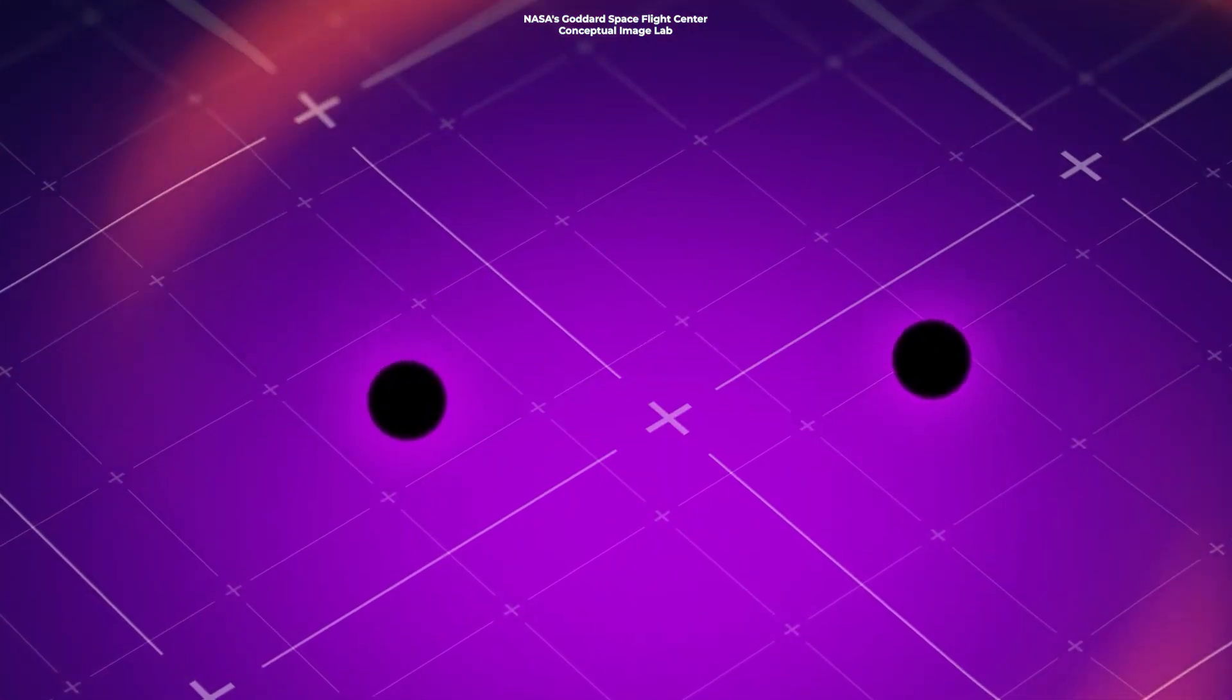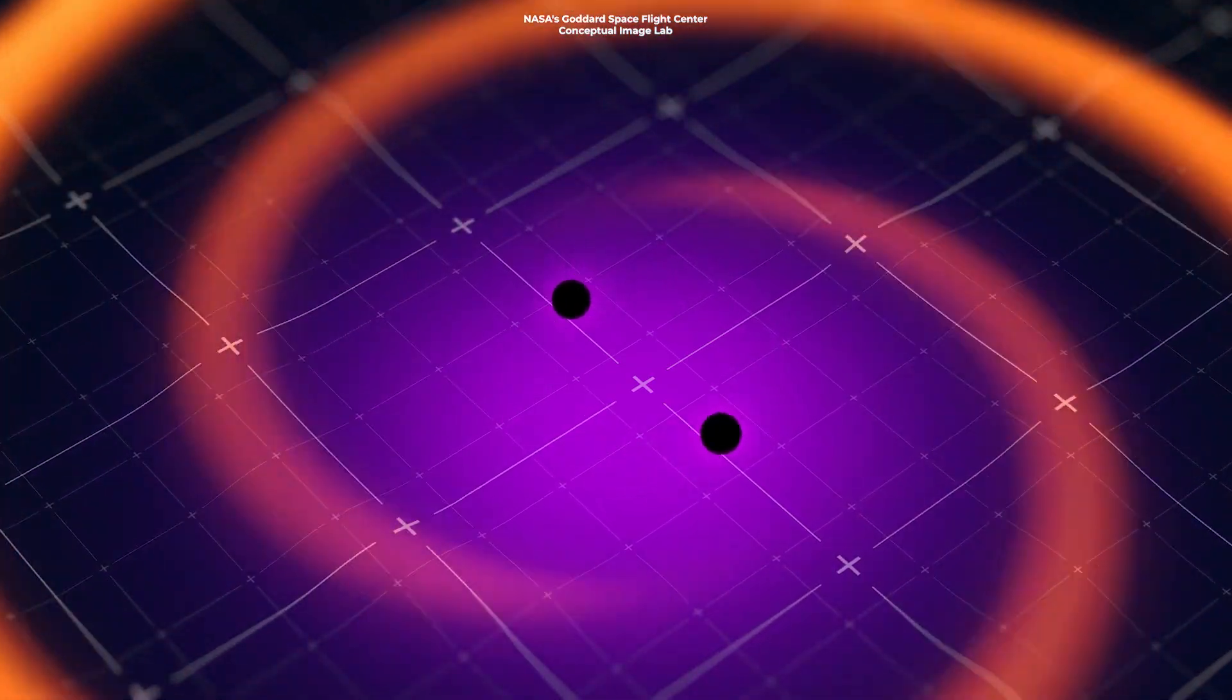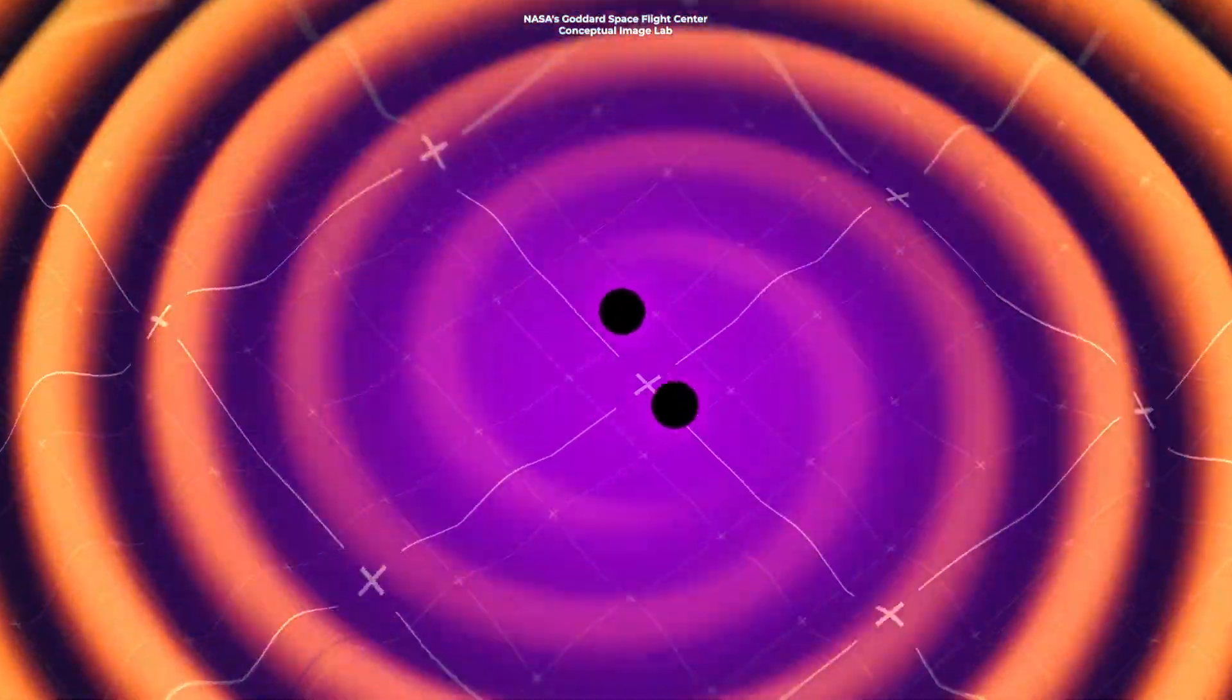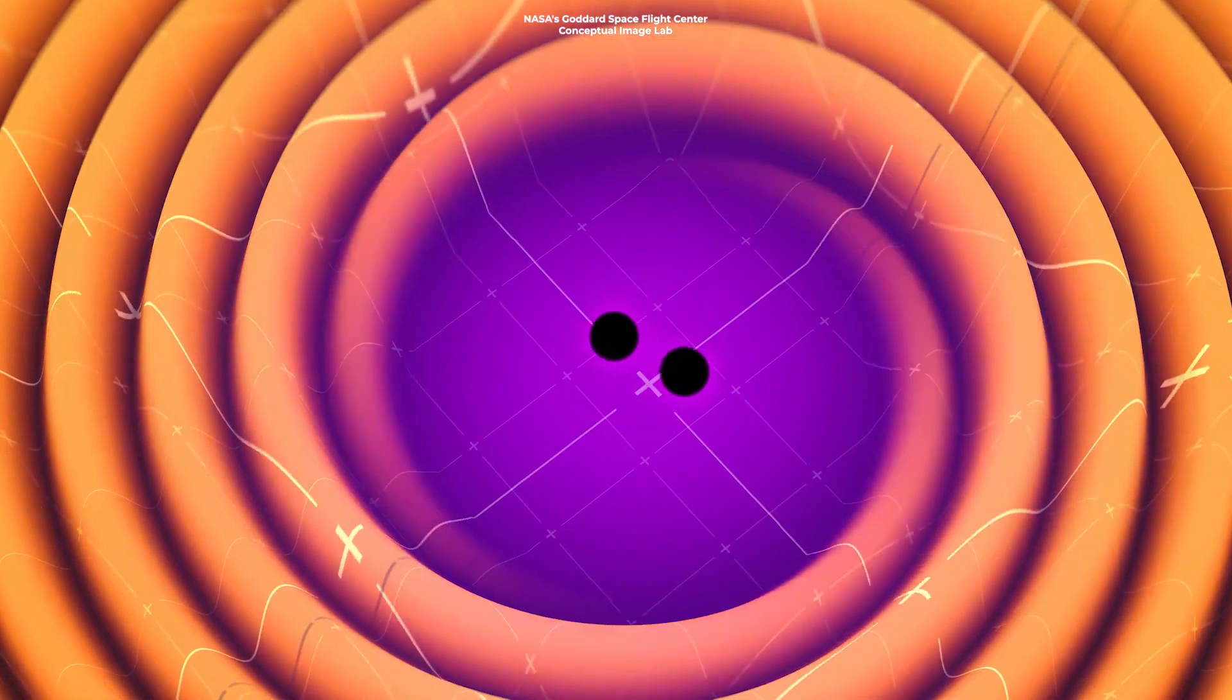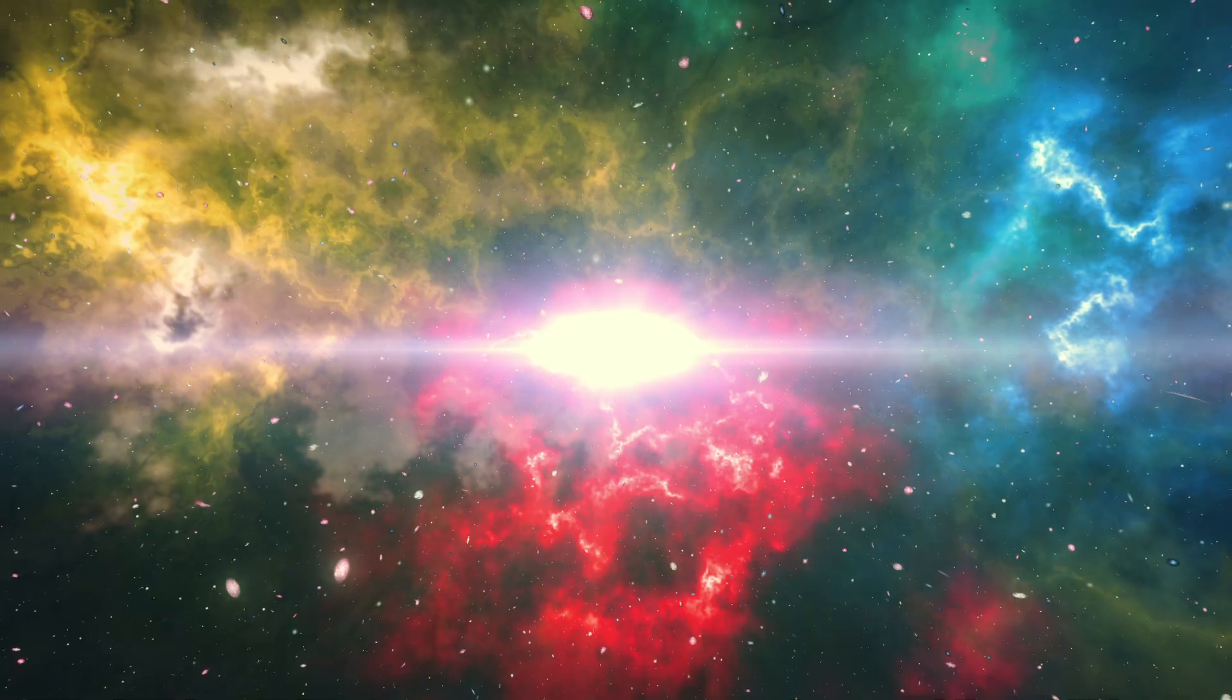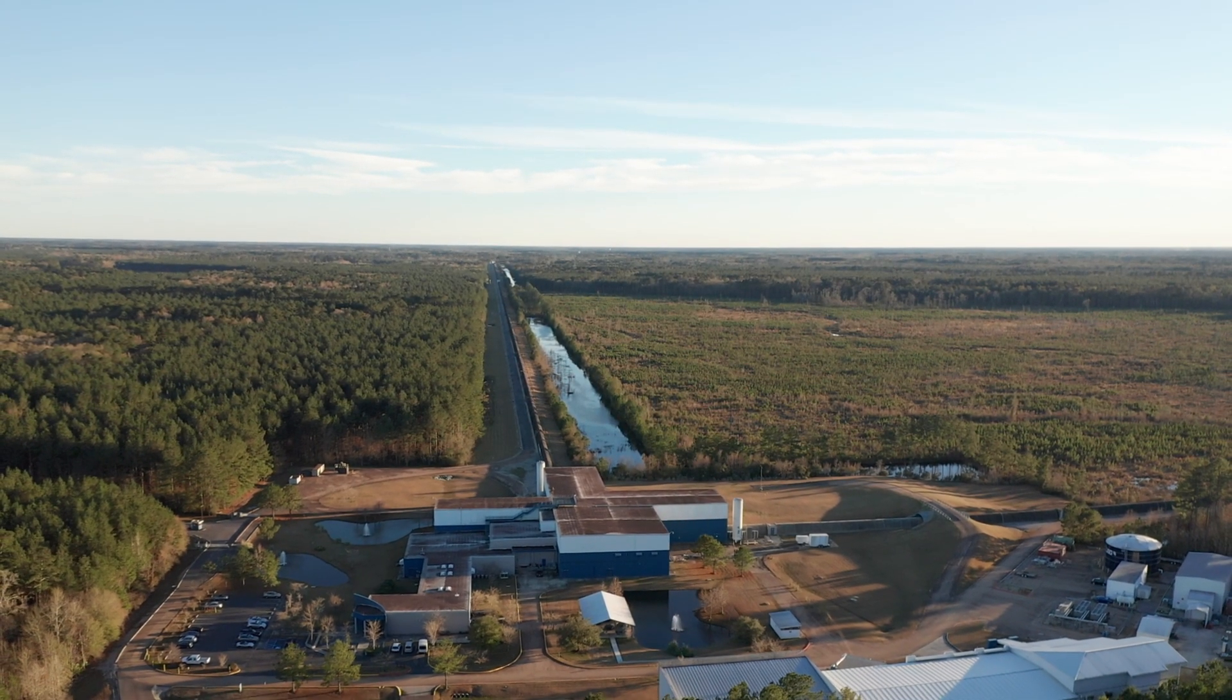Now that we know how to measure gravitational waves, we can use experiments like LIGO to learn about events in the cosmos that we have never been able to see before, such as mergers of supermassive black holes in the early universe. But how far back can we go? What about primordial gravitational waves from the birth of the universe itself? Will LIGO's discovery help us catch those?